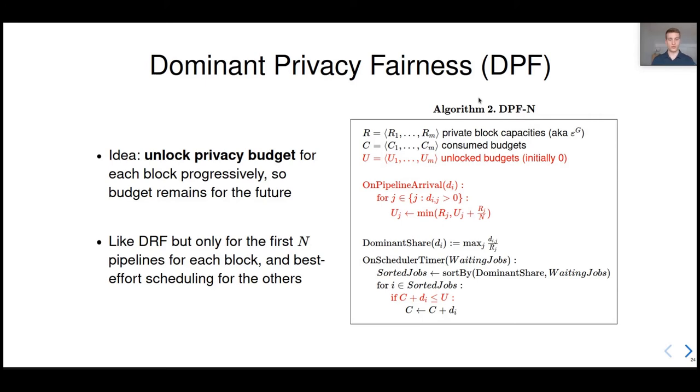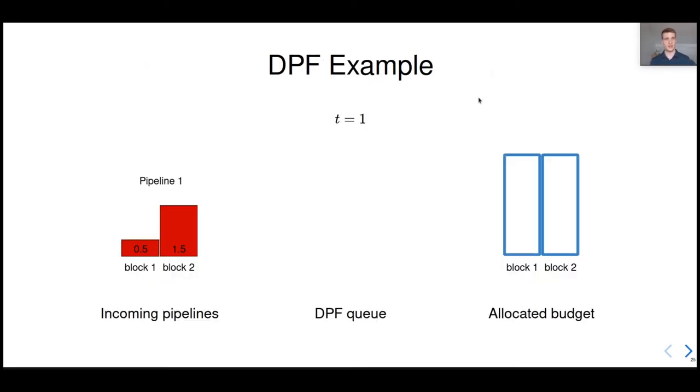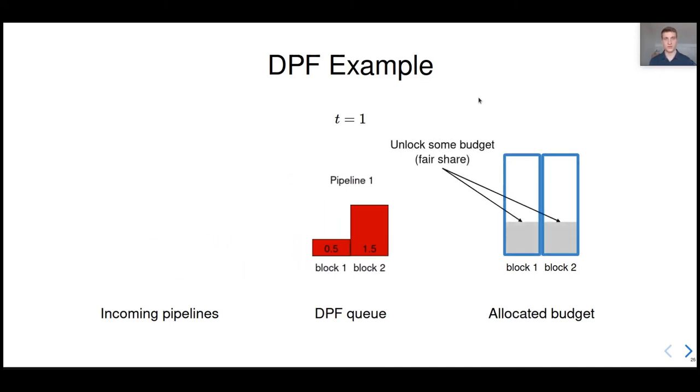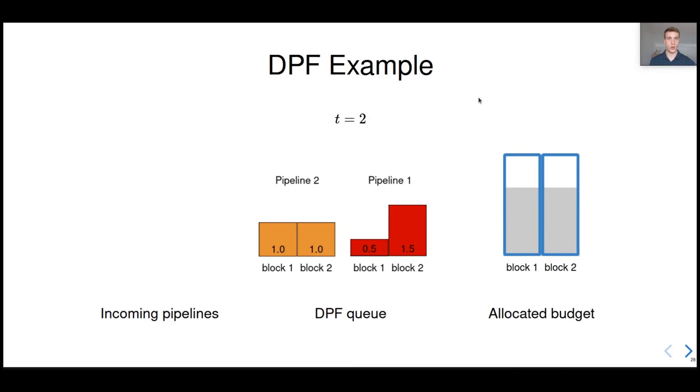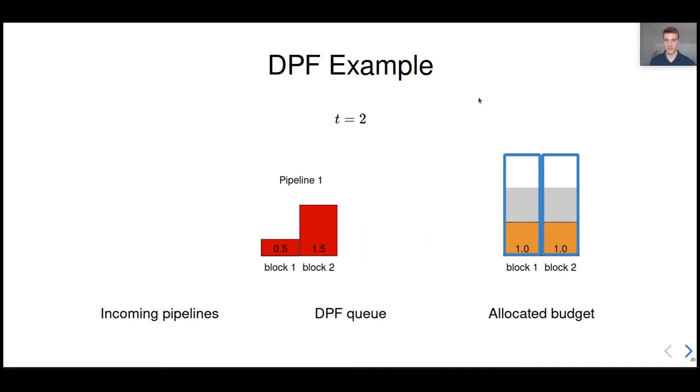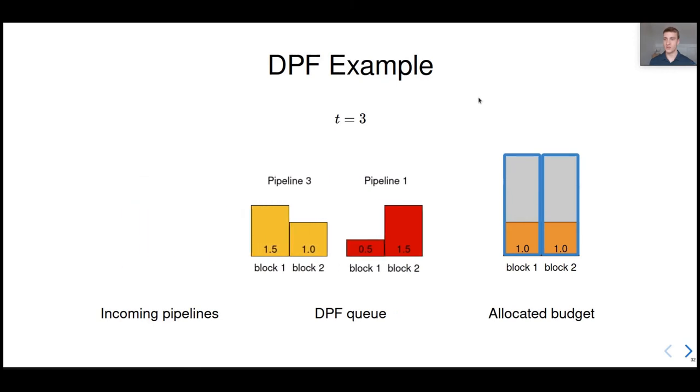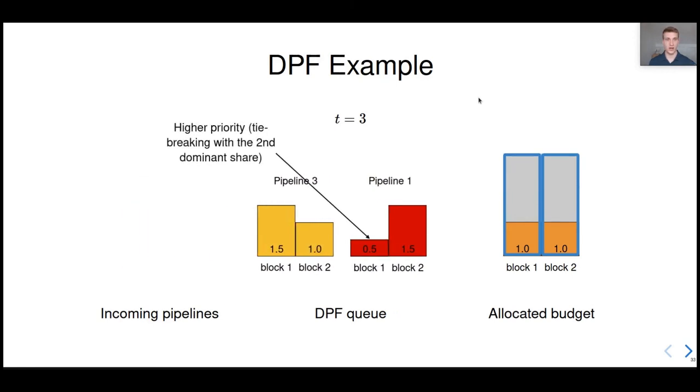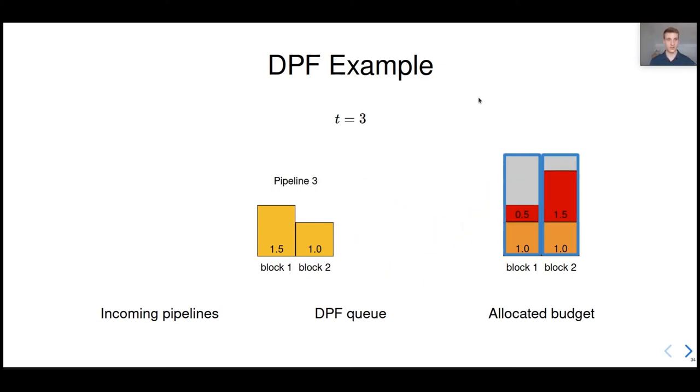Let me give you an example to show how it works in practice. So let's take these two blocks and pipelines. So when pipelines arrive, we unlock some budget, corresponding to their fair share. In this case, the pipeline is too large to fit in the unlocked budget, so we can't allocate it yet. We are just going to keep it in the queue for a while. Later on, if a new pipeline arrives, we are going to unlock more budget. Then, we are going to sort the queue according to the dominant share. So we are going to put the smallest pipeline first, and try to allocate it. Finally, once a new pipeline arrives, we are going to sort them again. In this case, they have the same dominant share, so we are going to sort them with the second dominant share, and try to allocate them. So that's how it works.